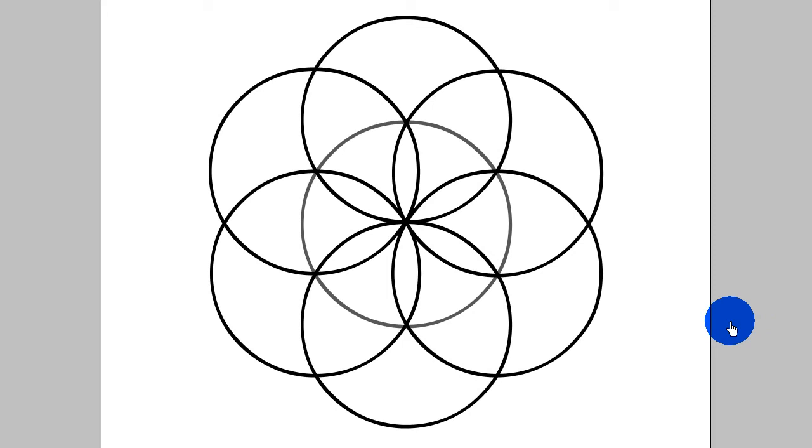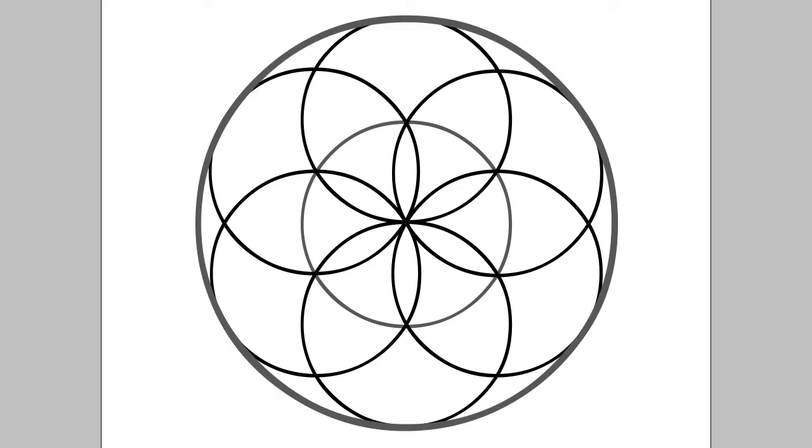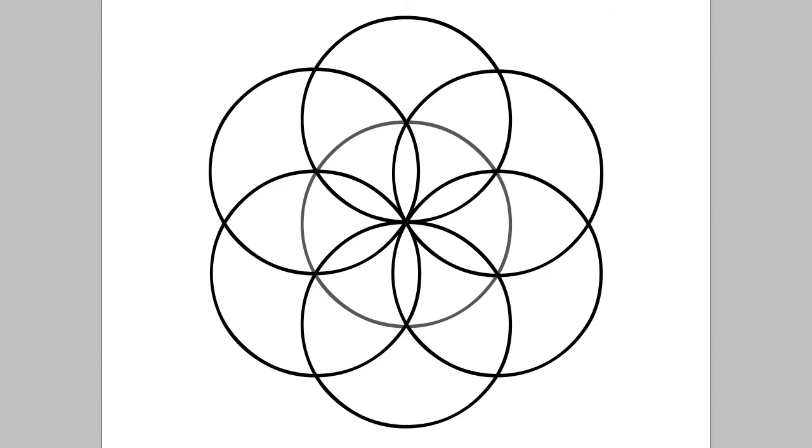And then from here, you can extrapolate this outer ring, which would give you a fractal version of the same thing, again and again and again on a bigger scale. And you can extrapolate this green Star of David here.